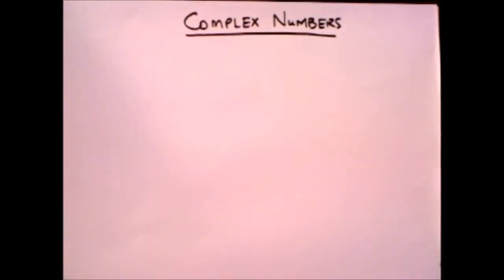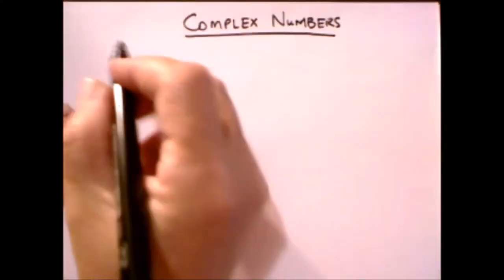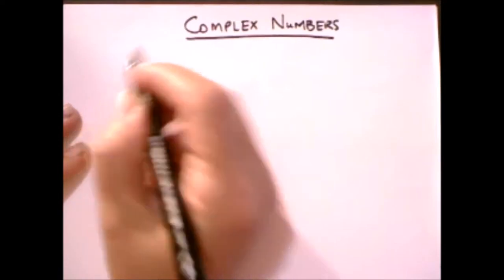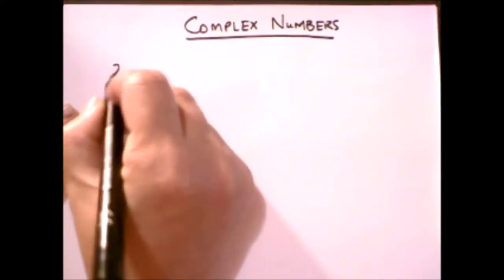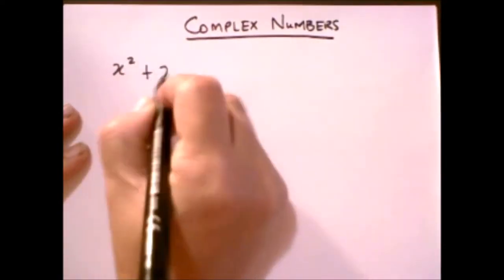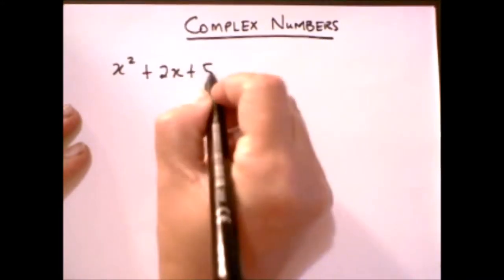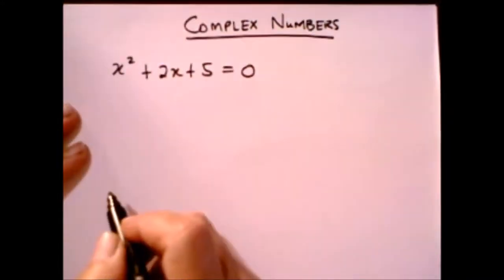In order to do this, we're going to go back to a problem you would have seen at school. So we're going to look at a quadratic equation, x squared plus 2x plus 5 equals 0.